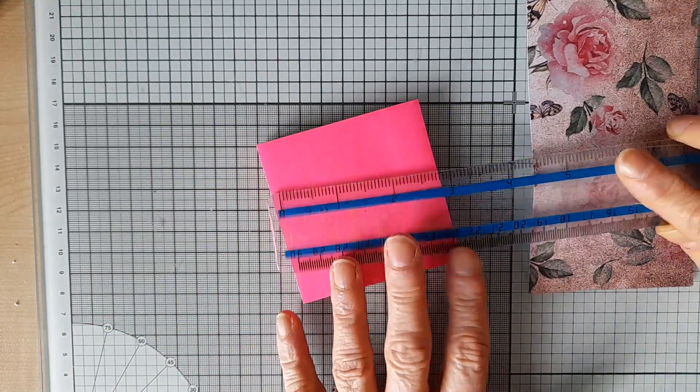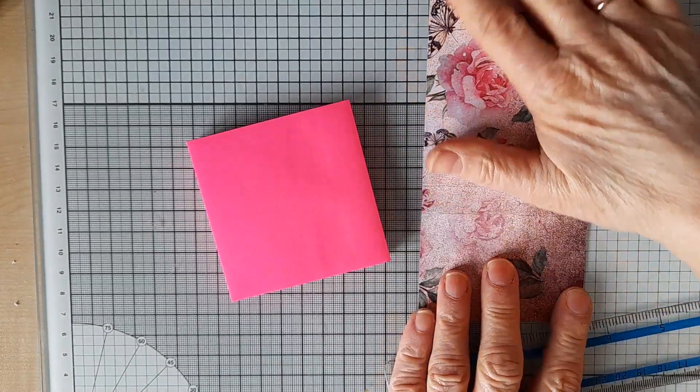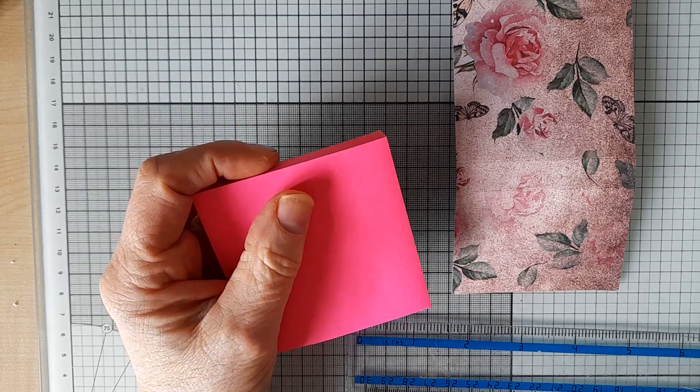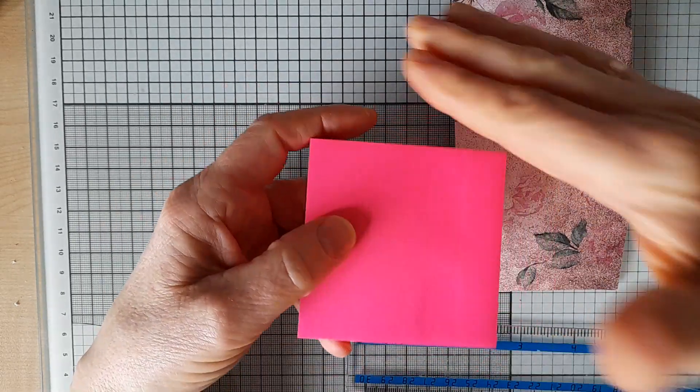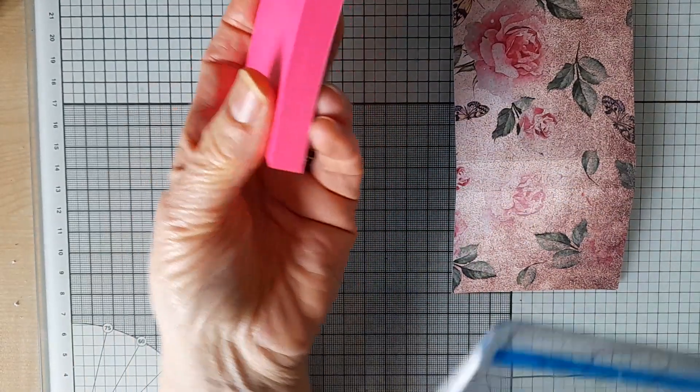So I cut a strip of paper that was three inches wide, and then to work out the measurements and where I need to put the scores, I measured the side and the side is half an inch.